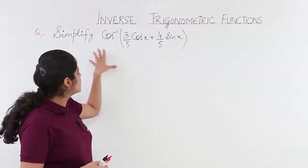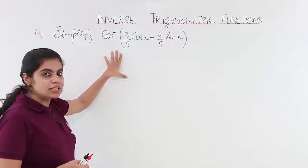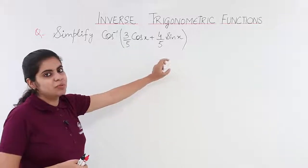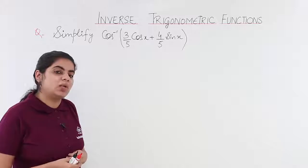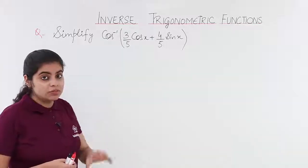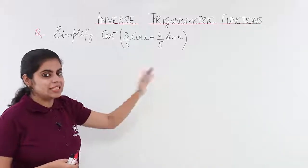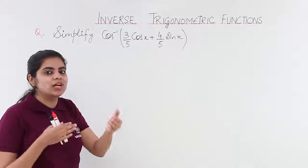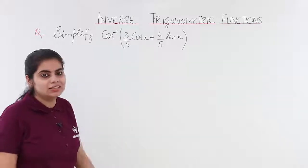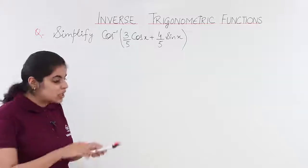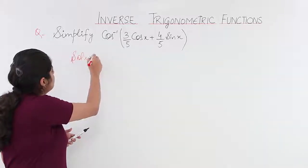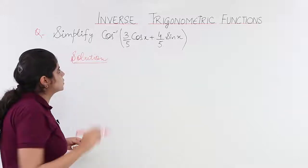The question is: simplify cos inverse of (3/5 · cos x + 4/5 · sin x). I have cos inverse on the outside, so I want only cos inside, so that cos and cos inverse basically nullify and cancel each other. Let's write the solution together and get started.